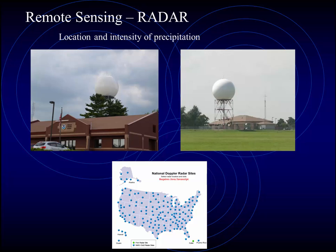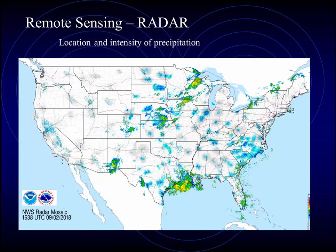Besides direct measurement, we also use remote sensing. Using radio waves is very useful to determine the location of precipitation. Here we see several radar stations; the one on the left is in north central Indiana. Under the large spherical dome is a radar dish. Radio waves may be sent out and they will reflect off of any material falling through the atmosphere, like rain, snow, and hail. That can be graphically represented as we see on this map here.